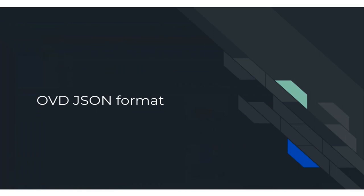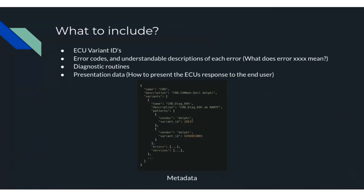Touching on the JSON format for Open Vehicle Diag: it includes ECU variant IDs — an ECU can have multiple variant IDs, each stipulating a certain software version which can dictate available functions, error codes, and descriptions. Also included are error codes with understandable descriptions, diagnostic routines you can query the ECU for, and presentation data for how to present the ECU's response to the end user. The metadata section states the ECU name, a description, and a list of variants — each variant has a name, description, a list of patterns (variant IDs), and lists of errors and services. All OVD JSON shown comes from a CRD ECU CBF file from Daimler — the common rail diesel injection ECU for their 2006 E-Class.